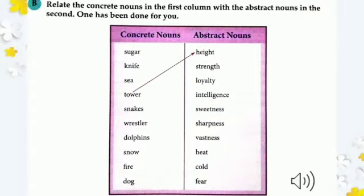Now match the concrete nouns in the first column with the abstract nouns in the second column. Tower — we can see and touch it, so it is a concrete noun. What is the abstract quality of a tower? Its height (بلندی). So tower is matched with height. Complete the remaining exercises in the same way.